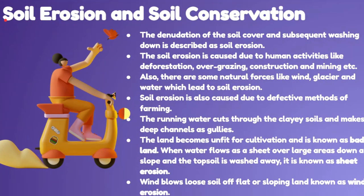Now let's study soil erosion and soil conservation. The denudation of soil cover and subsequent washing down is described as soil erosion, where the top layer is removed. Soil erosion is caused due to human activities like deforestation. When we do deforestation, wind and water are able to erode the top soil that was previously bound by tree roots.